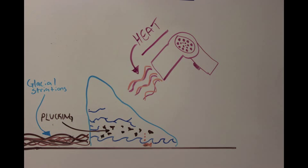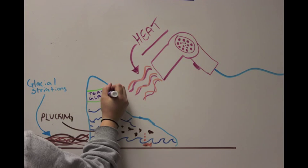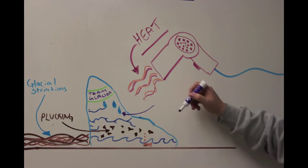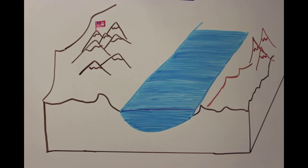As this erosion takes place, more heat is formed, causing more melt. The addition of water from this melt allows the glacier to move even more quickly.